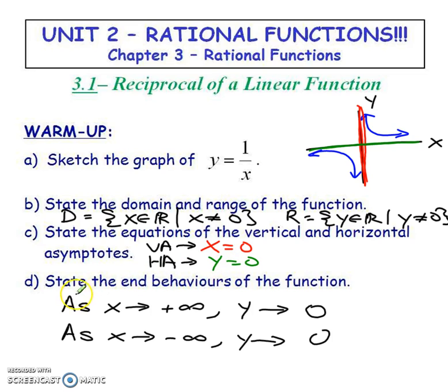Now this last part reads as, as x approaches positive infinity, y approaches zero. So what does that mean? As x approaches positive infinity, your graph is going to go down and down and down closer and closer to a y value of zero. Just like as x approaches negative infinity, y is going to approach zero. So as x approaches negative and more negative numbers, your graph is going to go up, up, up towards zero but never touches.